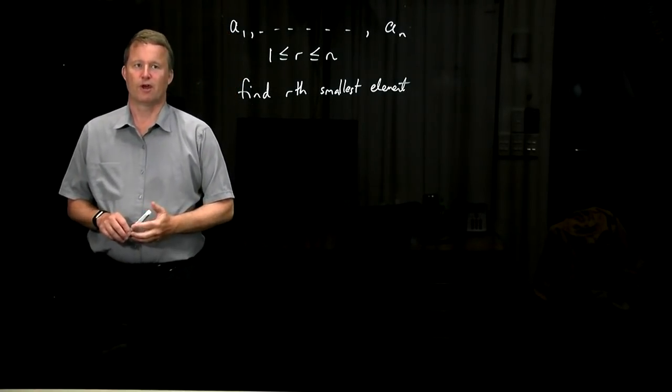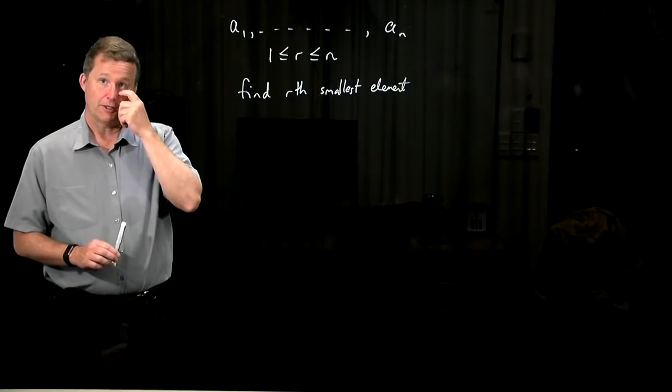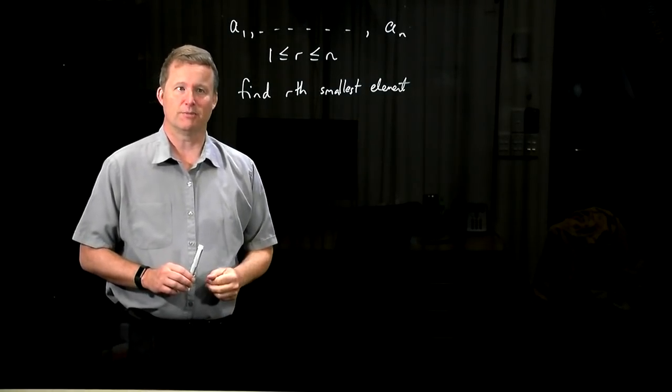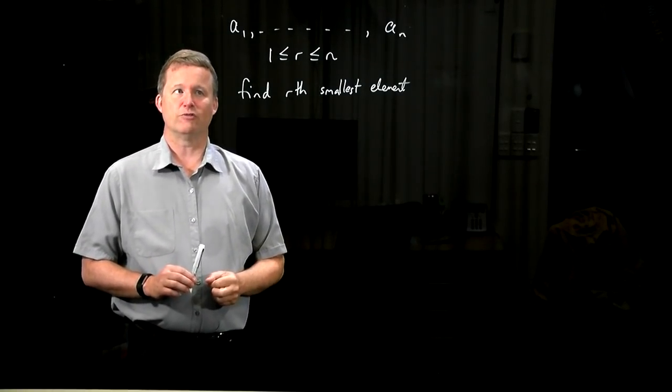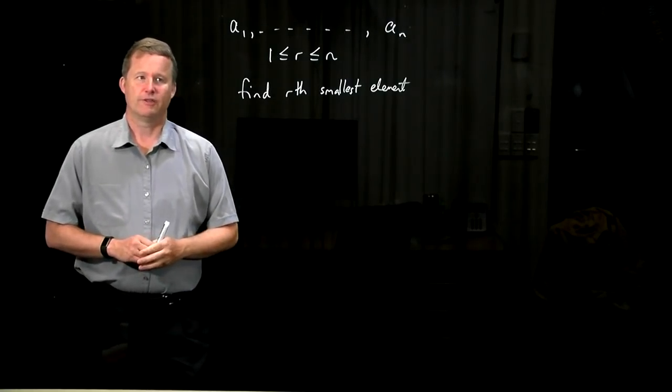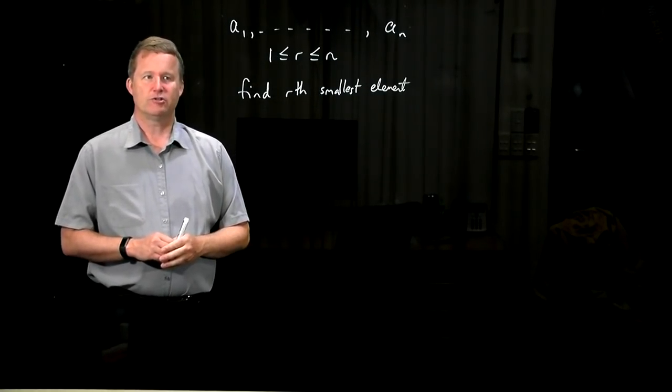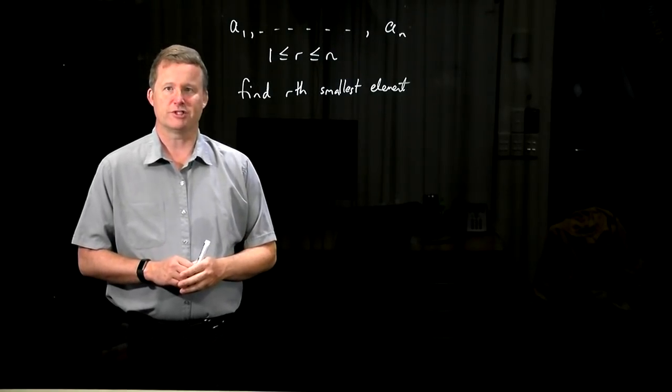If r is 1, we're finding the minimum. If r is n, we're finding the maximum. If r is say n over 2, then we're finding the median. In general, we're finding what's called the rth order statistic.